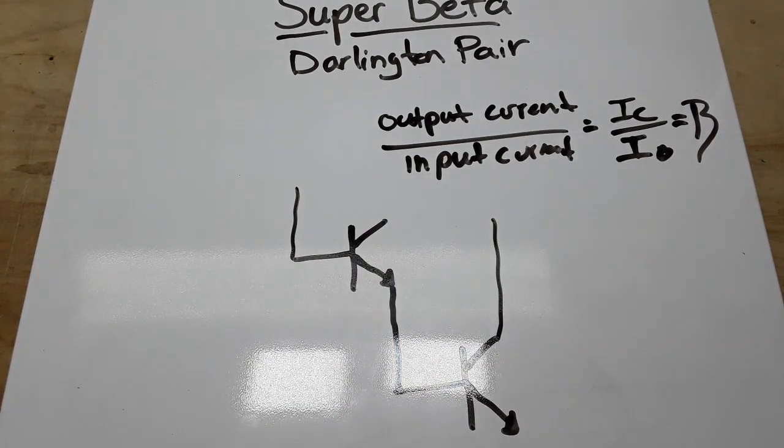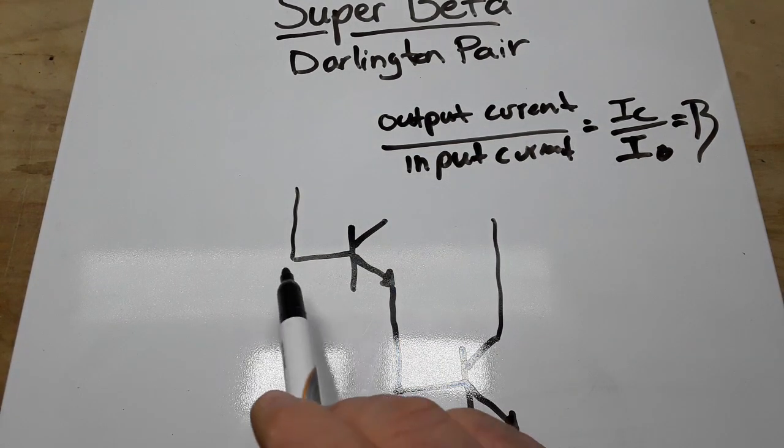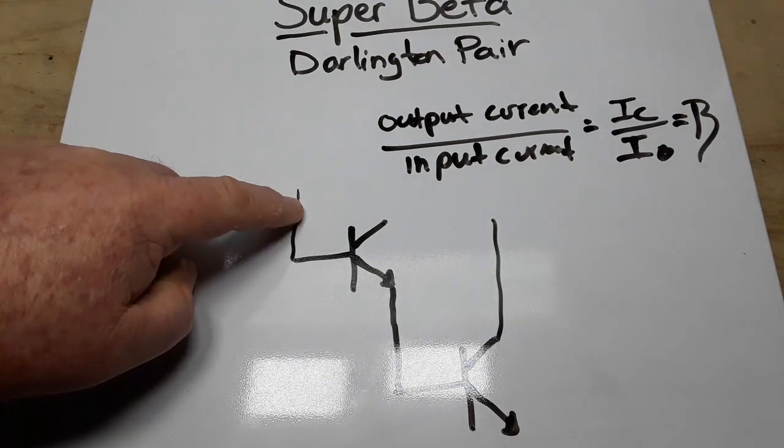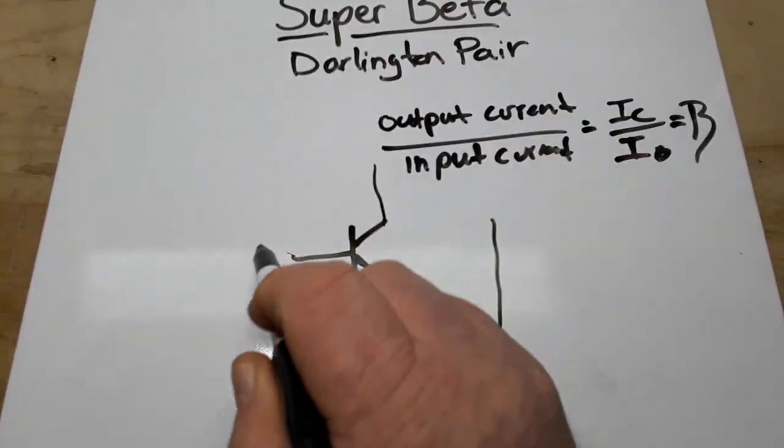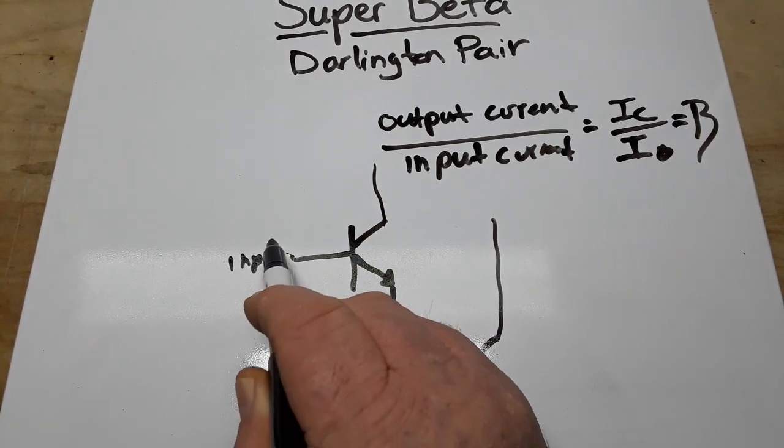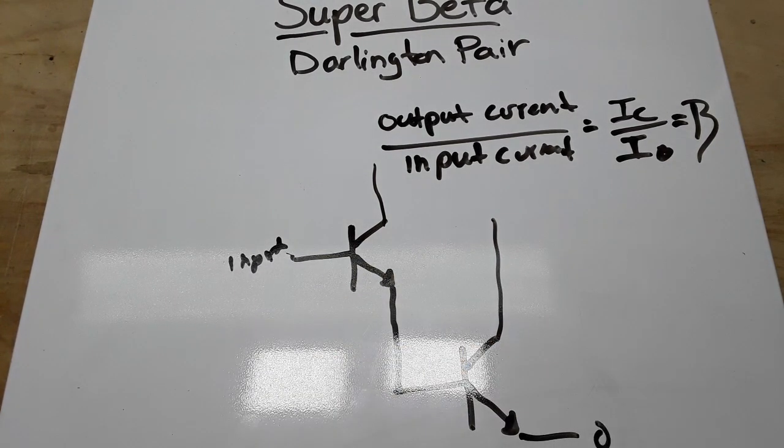Our collectors go to VCC, and this is, whoops, that's not a collector, it's a base. Our bases go to VCC, this is our input, and this is our output.